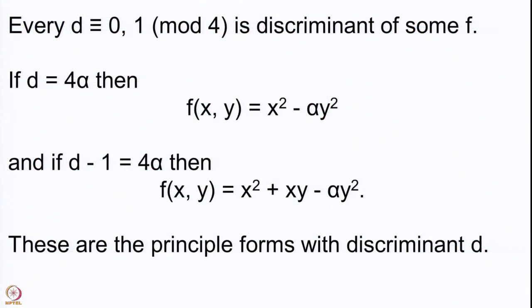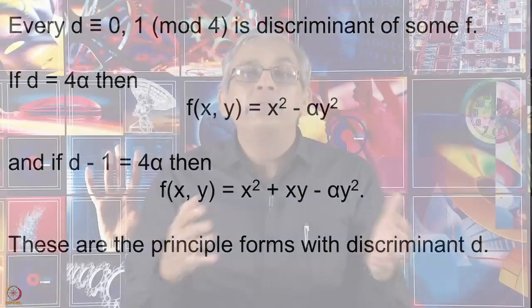Moreover, these two example forms are the simplest looking forms — even in the second one, the coefficient of x² is 1. These are the forms we naturally associate to these discriminants, and so they have names. These are called principal forms with discriminant d. Whenever we have a discriminant d, we check whether d is 0 mod 4 or 1 mod 4 and write down the corresponding principal form.